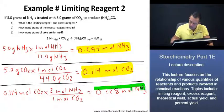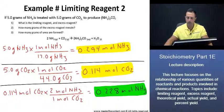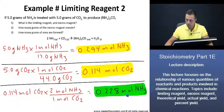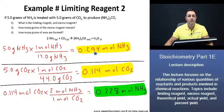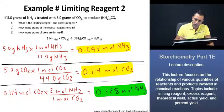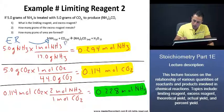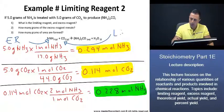What this number indicates is that in this reaction, when 0.114 moles of carbon dioxide is consumed, 0.228 moles of ammonia is consumed. We initially have 0.294 moles of ammonia, so we're going to have some left over. Because of that, the limiting reagent is carbon dioxide, and the excess reagent is ammonia.